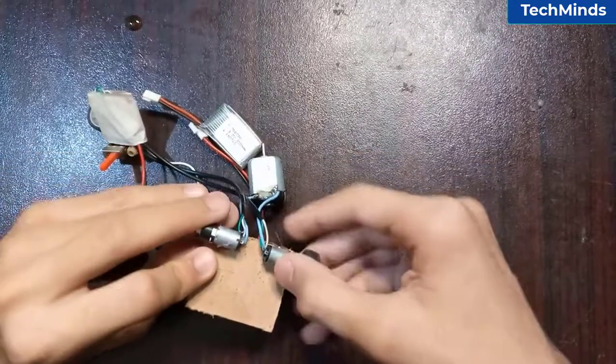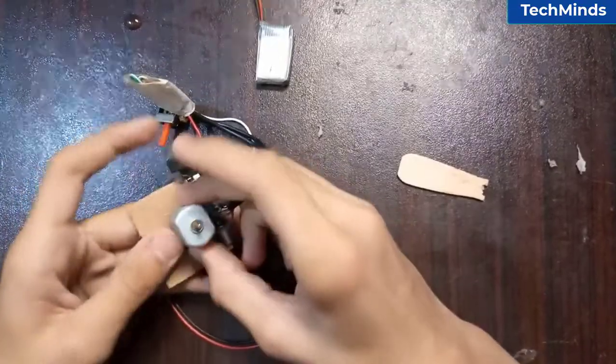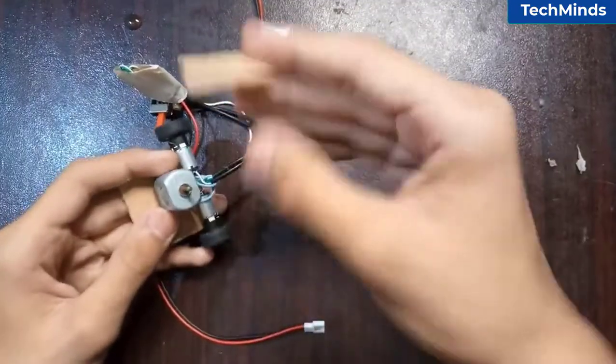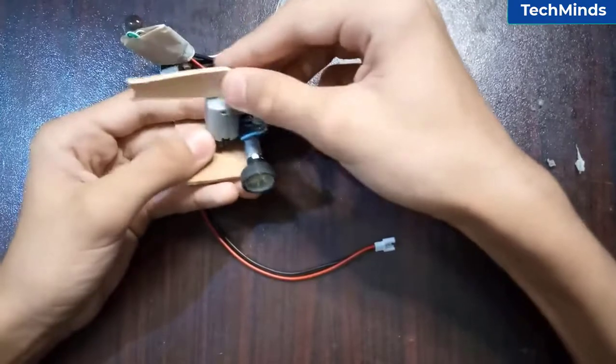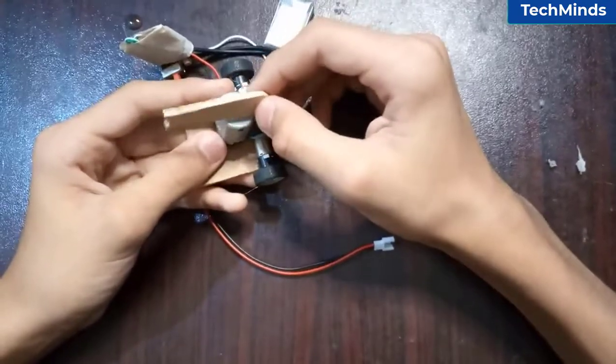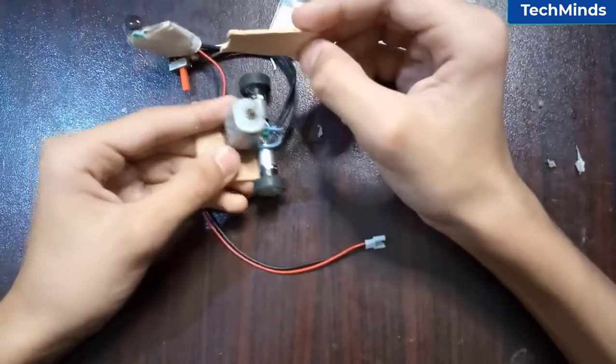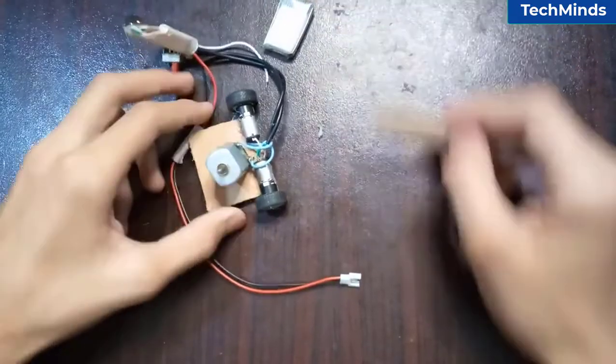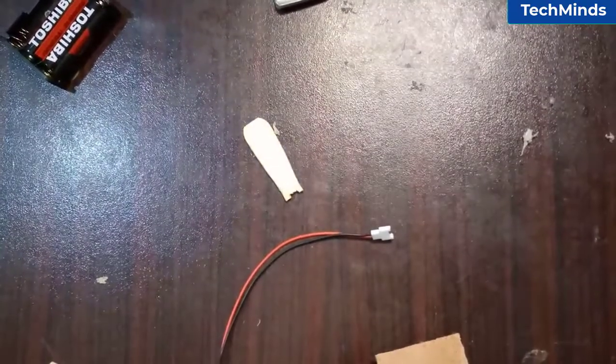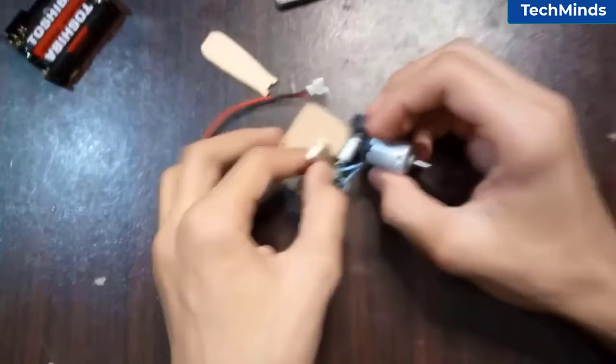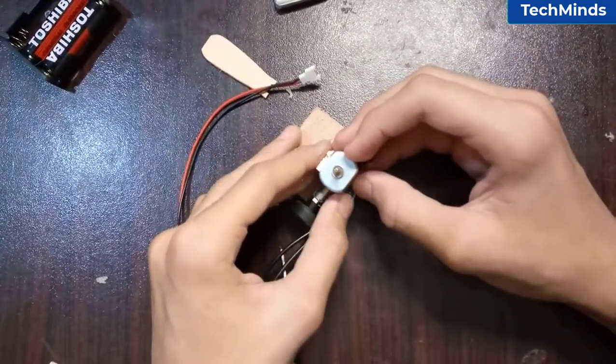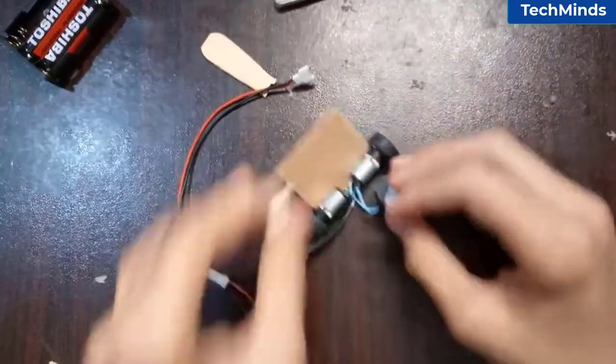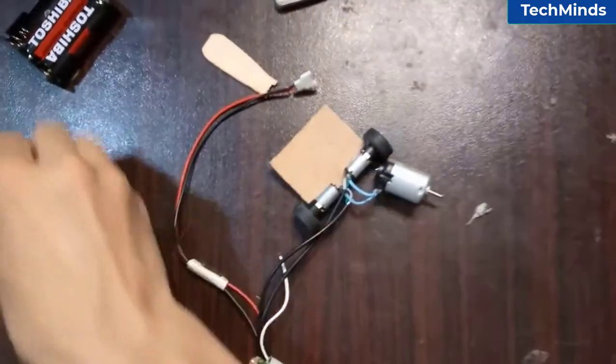Now we'll attach the motor here. This stick part will go onto the motor. We'll attach this wooden piece to the motor so it can act as a stand and help the motor stay in place.